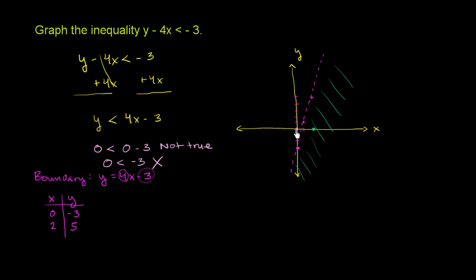And it makes sense because that 0, 0 is not part of the solution. Now, we could go on the other side of our boundary line. And we could take the point, let's take the point 3, 0.